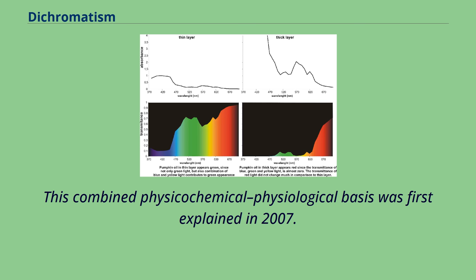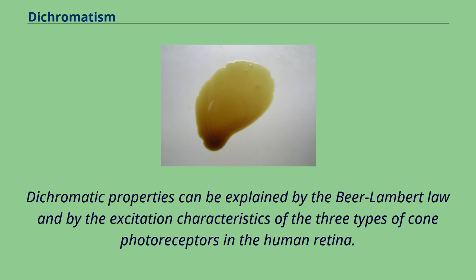This combined physico-chemical and physiological basis was first explained in 2007. Dichromatic properties can be explained by the Beer-Lambert law and by the excitation characteristics of the three types of cone photoreceptors in the human retina.